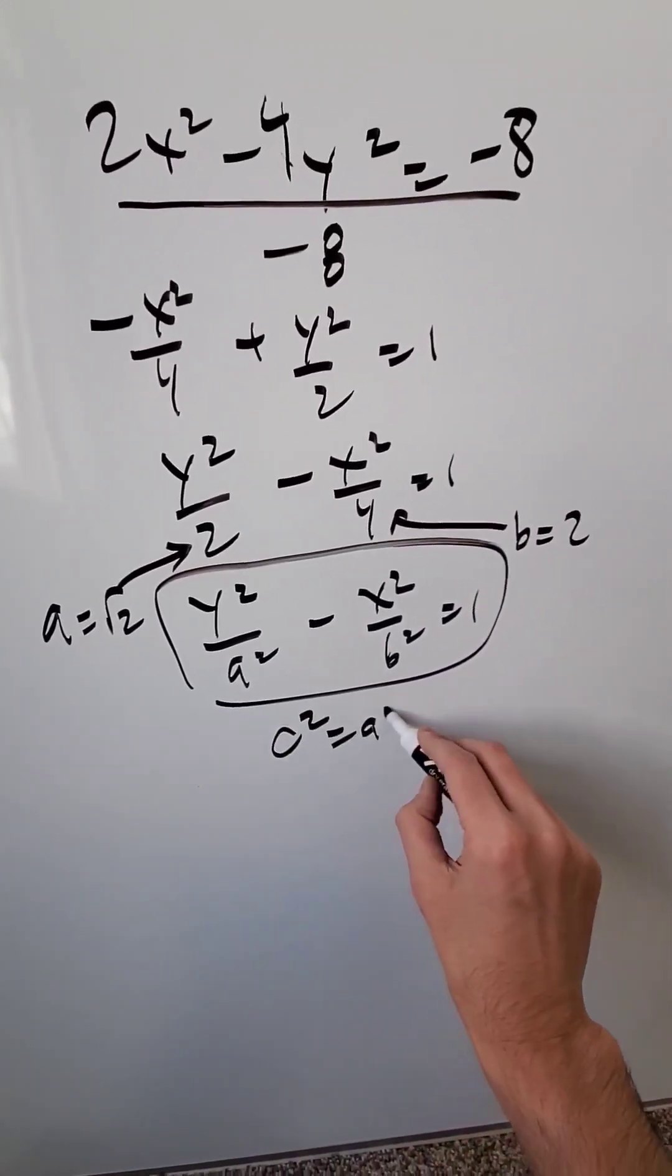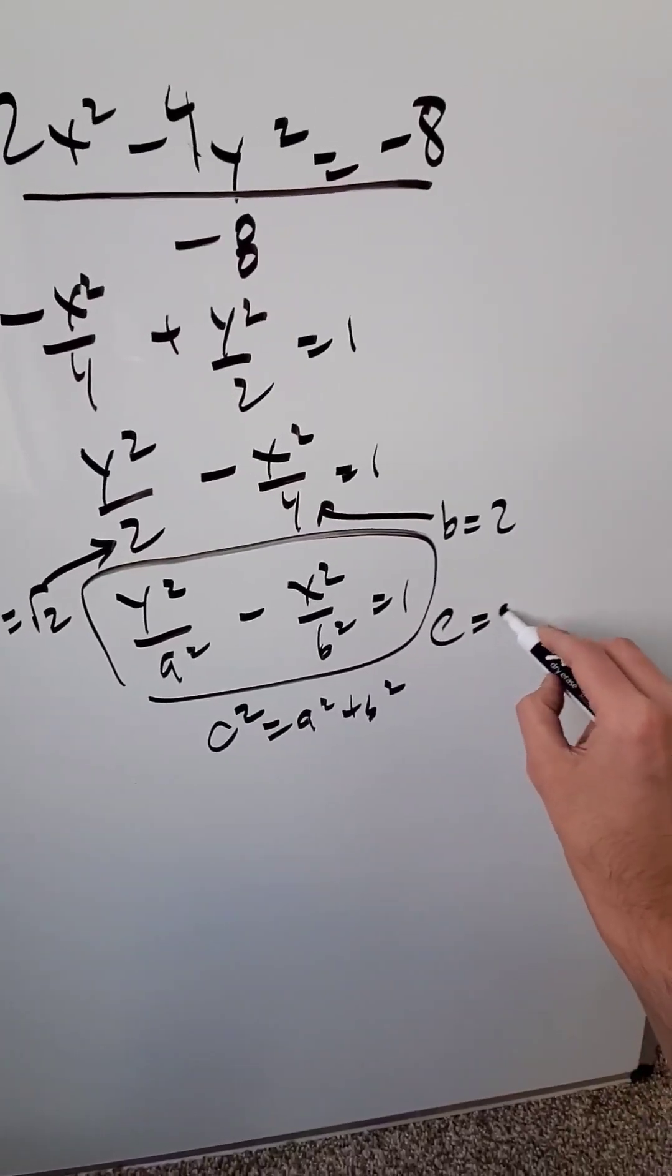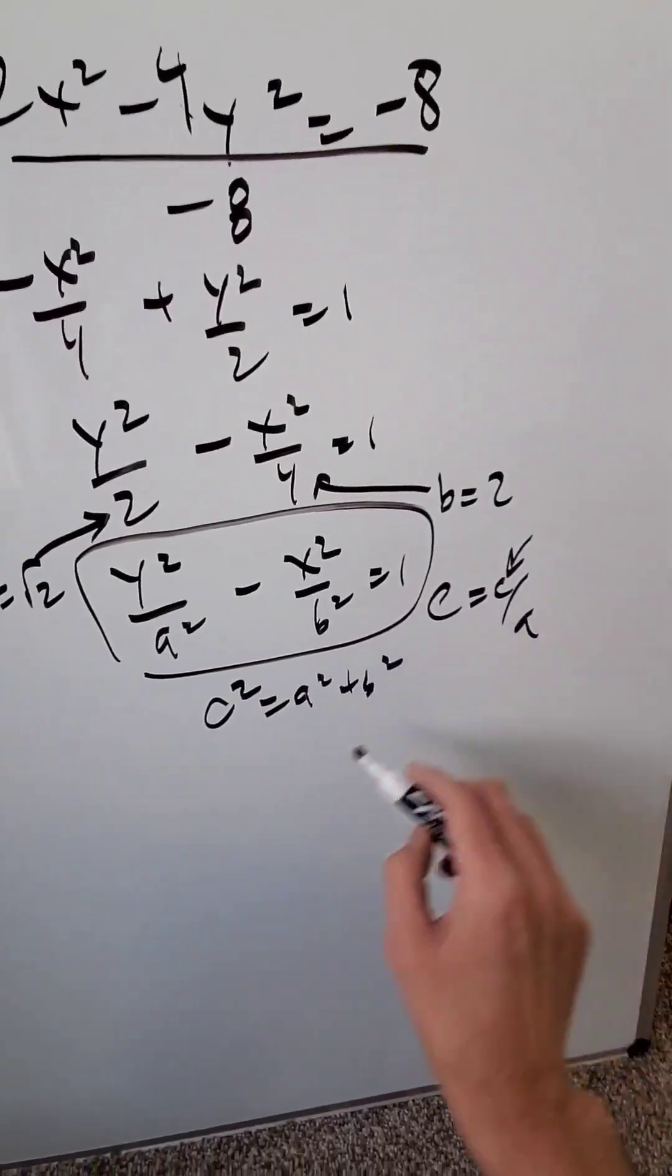You know c² is equal to a² + b² for hyperbola and eccentricity is equal to c over a. I need to determine the c.